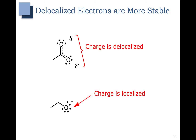In my example here, we have two carbons and an oxygen in the bottom system, and two carbons and an oxygen in the top system, but the top one has an extra oxygen where the charge can then be delocalized across. This makes the top system much more stable than the bottom system.